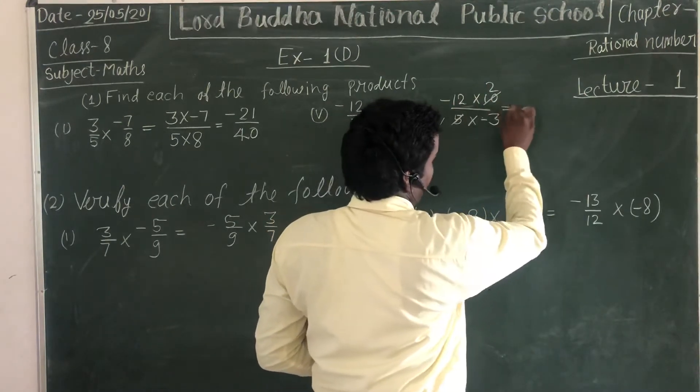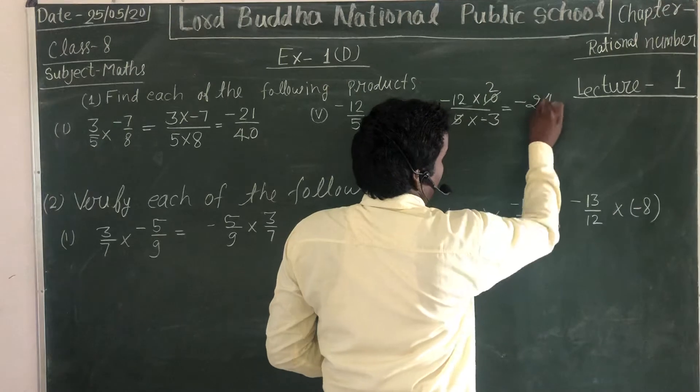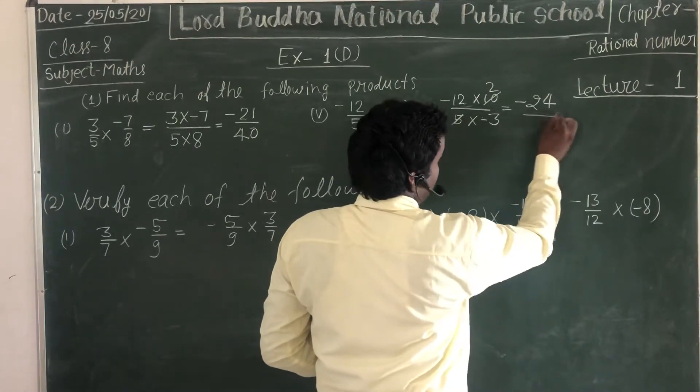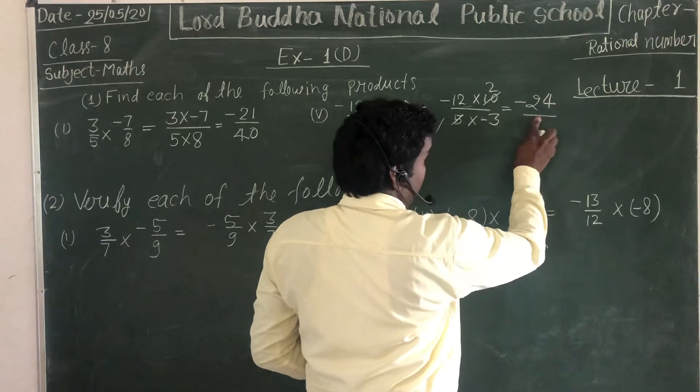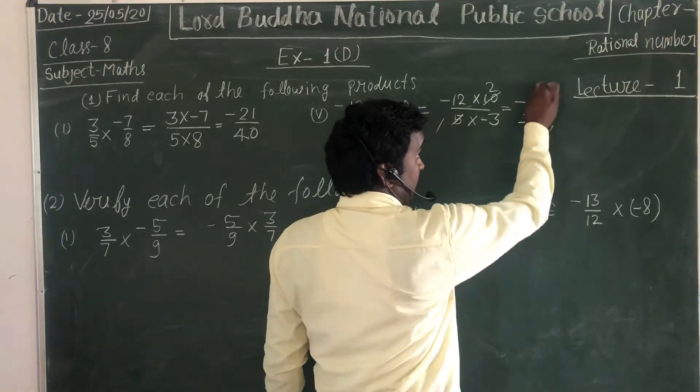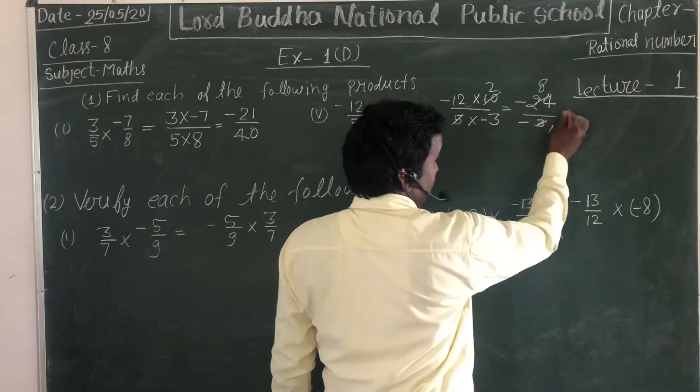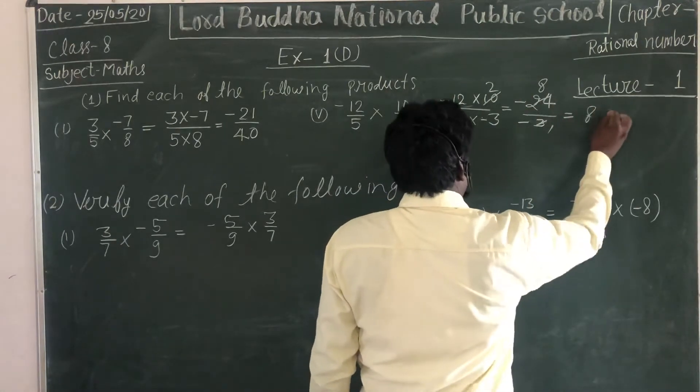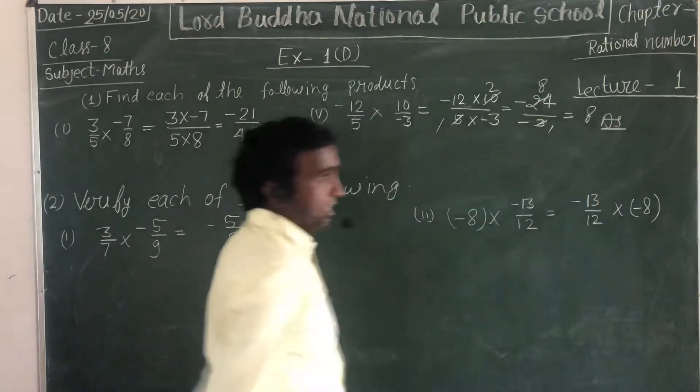So we compute: 12/5 times -5/4... simplifying by canceling common factors... 4 goes into 12 three times... the answer is -3/1. This is your answer.